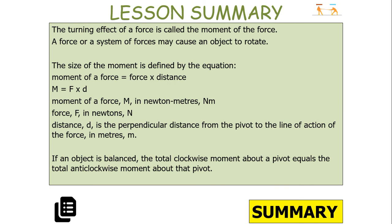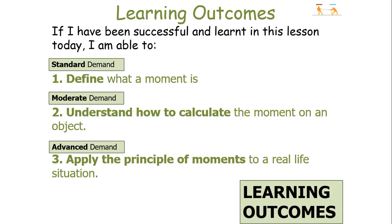To summarise today's lesson: the turning effect of a force is called the moment of the force. A force or system of forces can cause an object to rotate if it is fixed about a point. The moment is calculated using: moment equals force times perpendicular distance from the pivot to the line of action of the force. Moment is in newton metres, force in newtons, and distance in metres. If an object is balanced, the total clockwise moment about the pivot equals the total anticlockwise moment. Thank you very much for listening — I hope you've enjoyed it and have a lovely day.